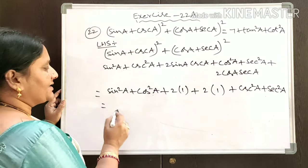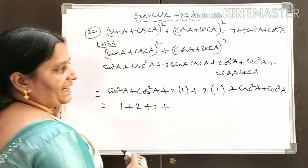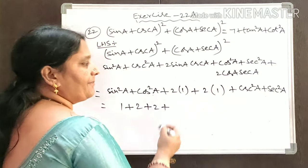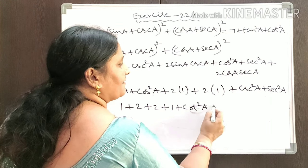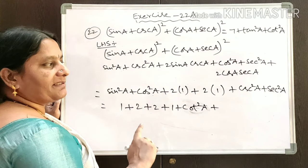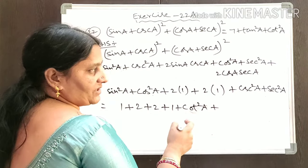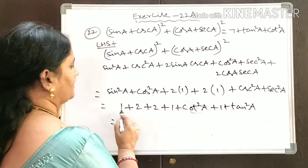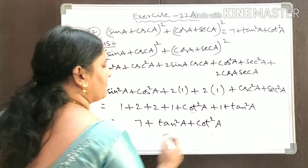So we have 1 + 2 + 2 + cosec²A + sec²A. Using the square relations: cosec²θ - cot²θ = 1, so cosec²A = 1 + cot²A. And sec²θ - tan²θ = 1, so sec²A = 1 + tan²A. Substituting these, we get 1 + 2 + 2 + 1 + cot²A + 1 + tan²A = 7 + tan²A + cot²A, which equals the RHS.